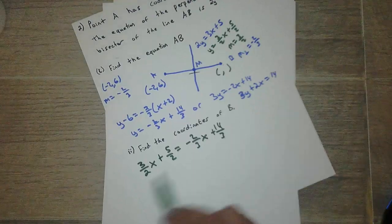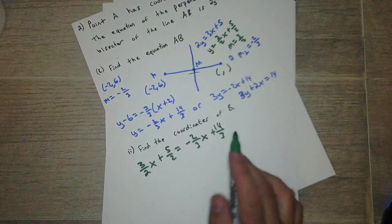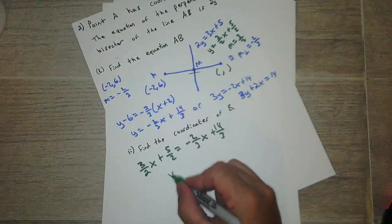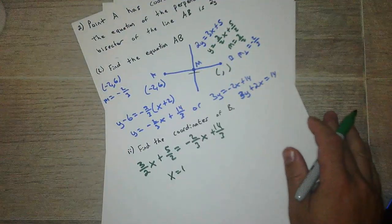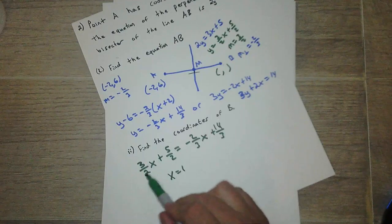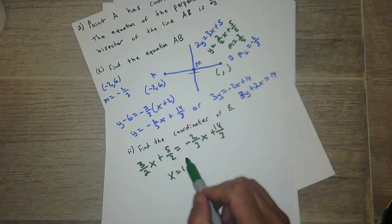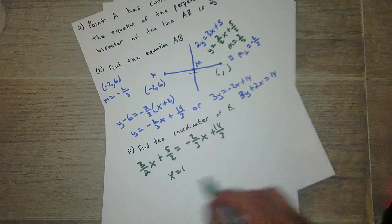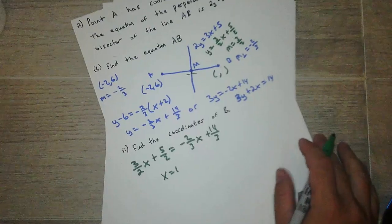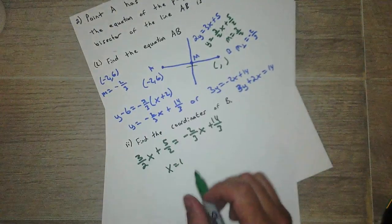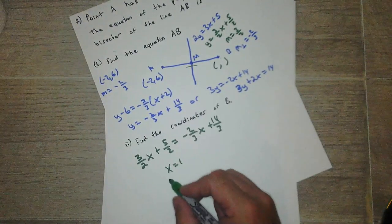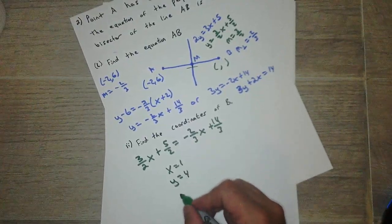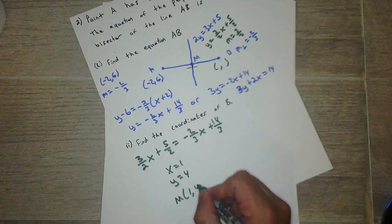Alright, so add this over, subtract this over, do whatever you've got to do to solve for x. And you'll get x is equal to 1. Easiest thing, 2 and 3, common denominator is 6. So if you multiply everything by 6, that will cancel out all the fractions. And that might be easier to solve it that way. And then you'll get 1. Okay, plug 1 back into here and you'll get y is equal to 4. So that's the midpoint: (1, 4).